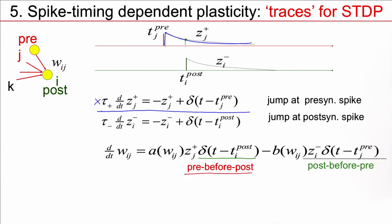Now, similarly, we can say a postsynaptic spike leaves a trace. This trace will decay with the time constant tau_minus. And if later there is a second presynaptic spike, then we read out the value of the postsynaptic trace, called z_i^-.